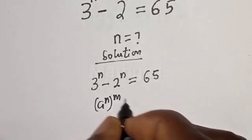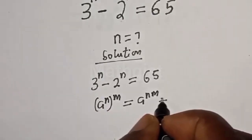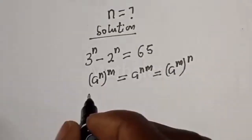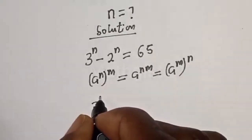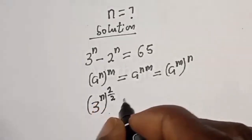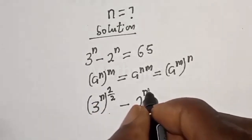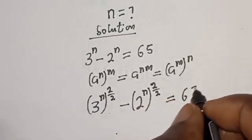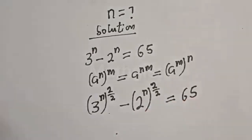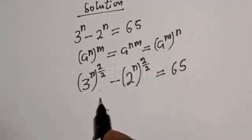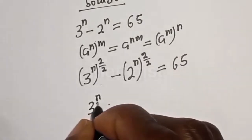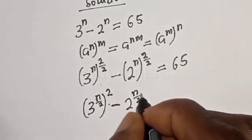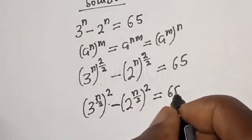Recall that a raised to power n, to the power of m, is equal to a raised to power n×m, which is equal to a raised to power m, to the power of n. Using this, we apply a trick: rewrite 3^n as (3^(n/2))^2 and 2^n as (2^(n/2))^2. This does not change the exponent since 2 divided by 2 equals 1. So the expression becomes 3 raised to power n/2, squared, minus 2 raised to power n/2, squared, equal to 65.